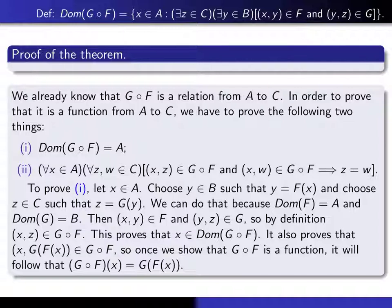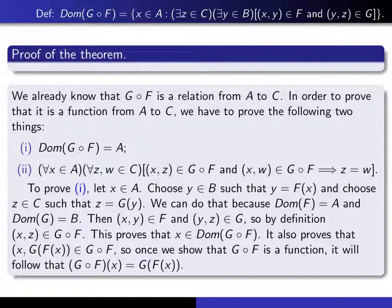Going a bit further: to say that these two things happen is to say that (X, Z) is an element of F composed with G, which makes a stronger case that X is in the domain of this relation. At the same time, we've also proved that (X, G of F of X) is an element of F composed with G, because Z equals G of F of X. So that proves this as well.